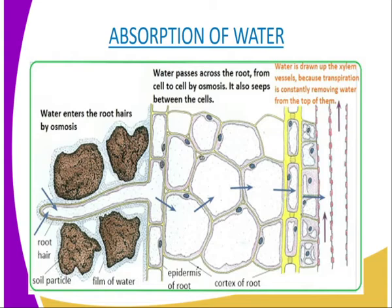Generally, water is transmitted through the xylem vessels — either those from the roots or the stem — up to the leaves. That is about the absorption of water, and now we are going to have the uptake of minerals.